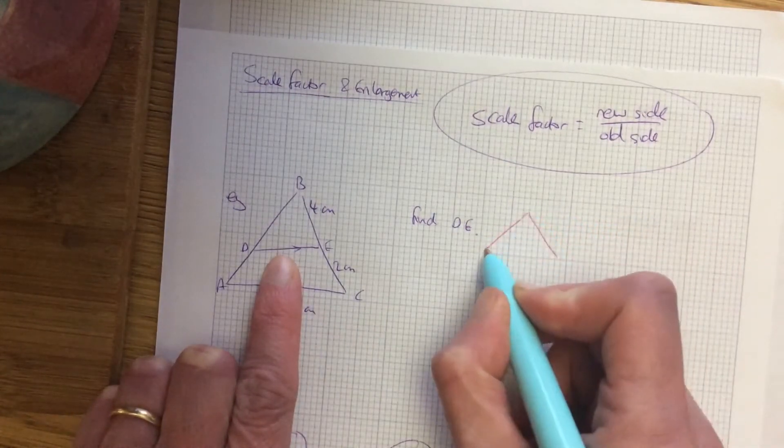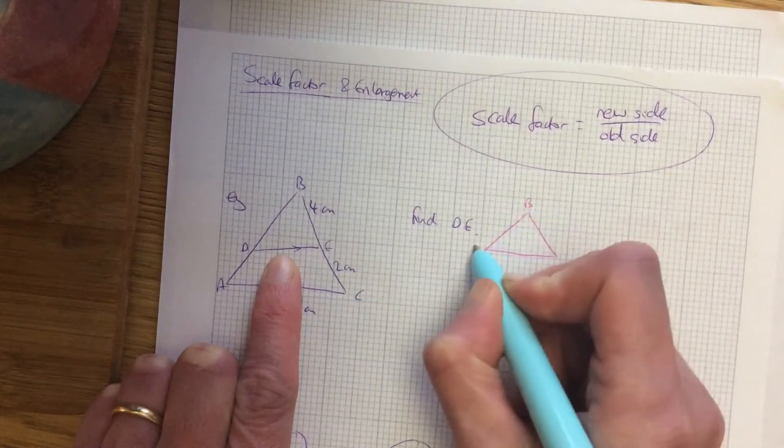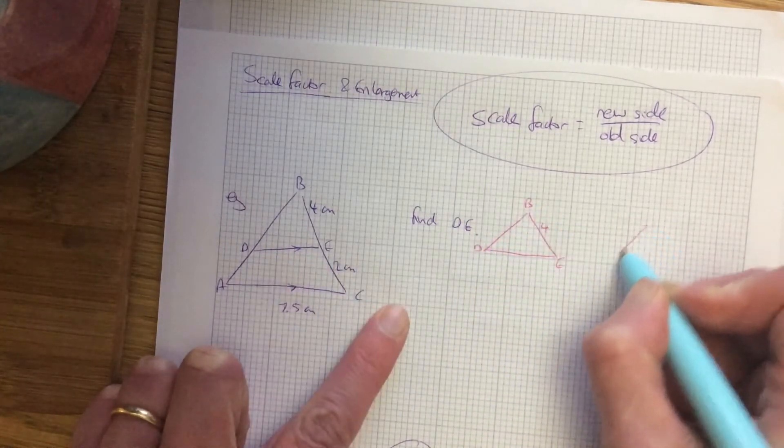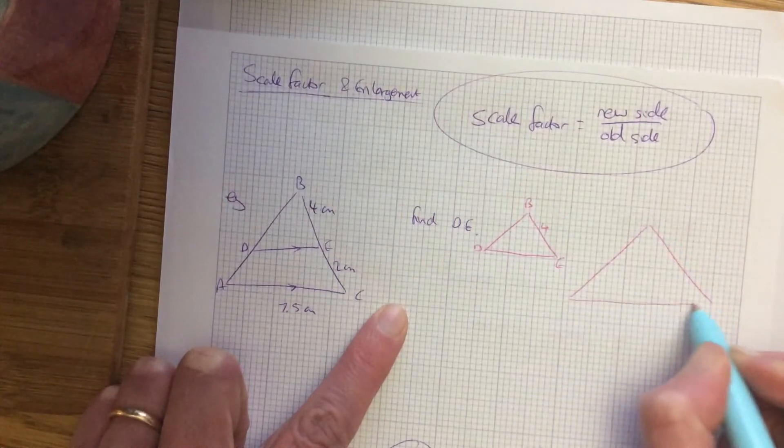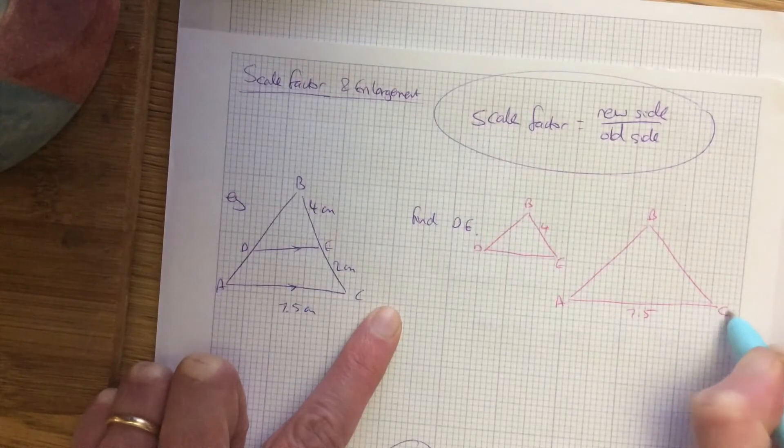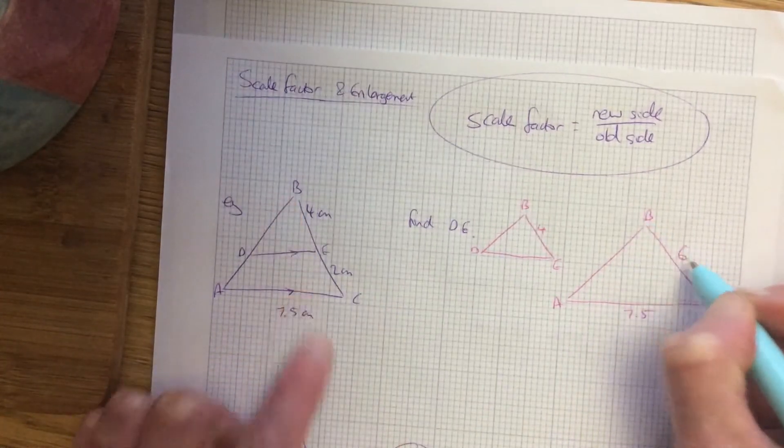I've got two triangles, I've got the wee triangle at the top and this side is four and I've got a big triangle BA 7.5C and this BC is six.